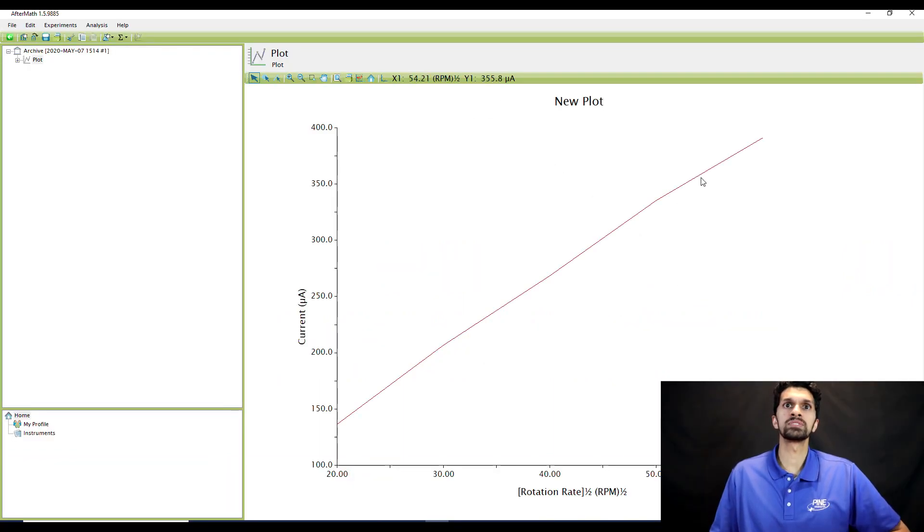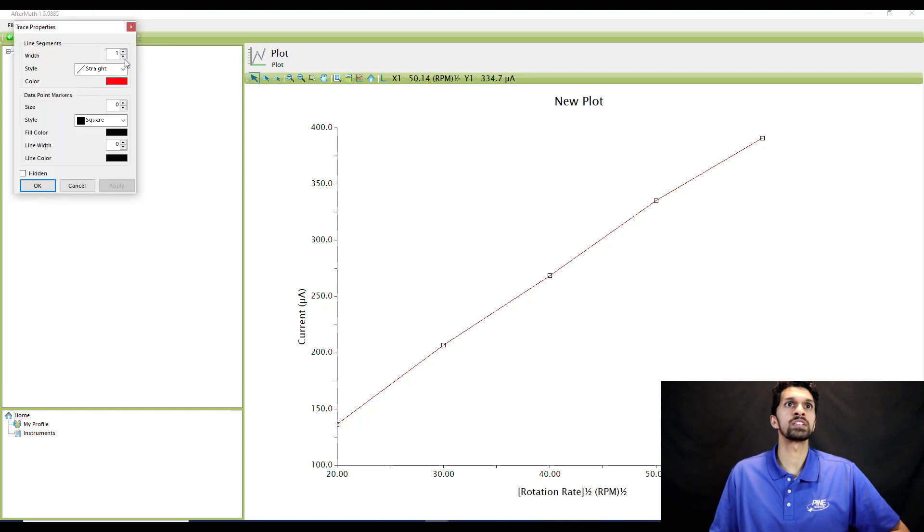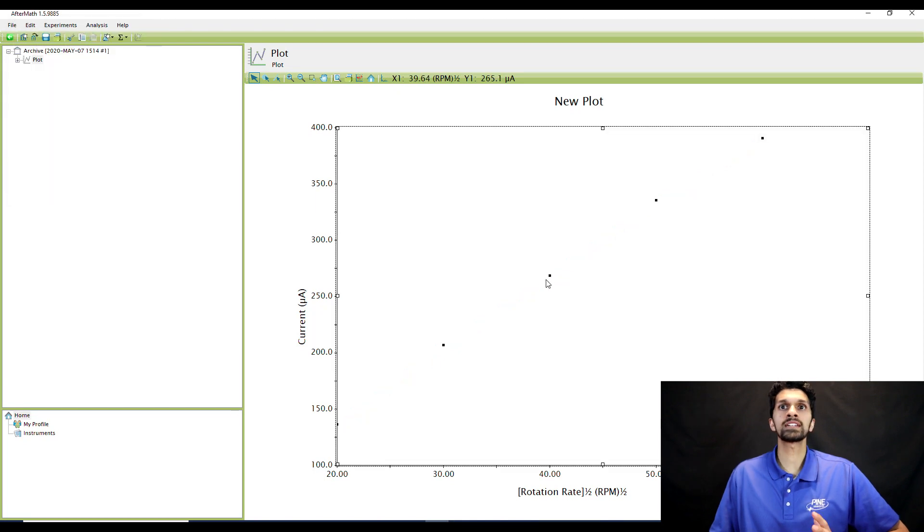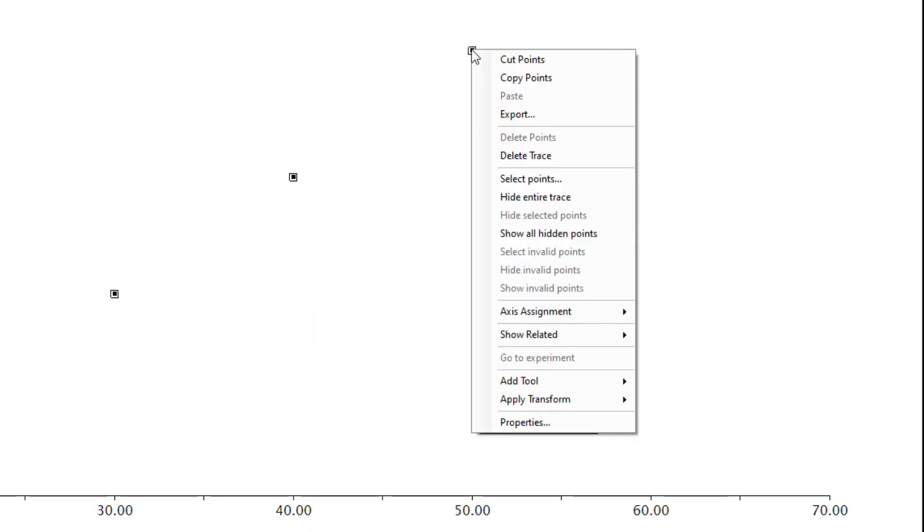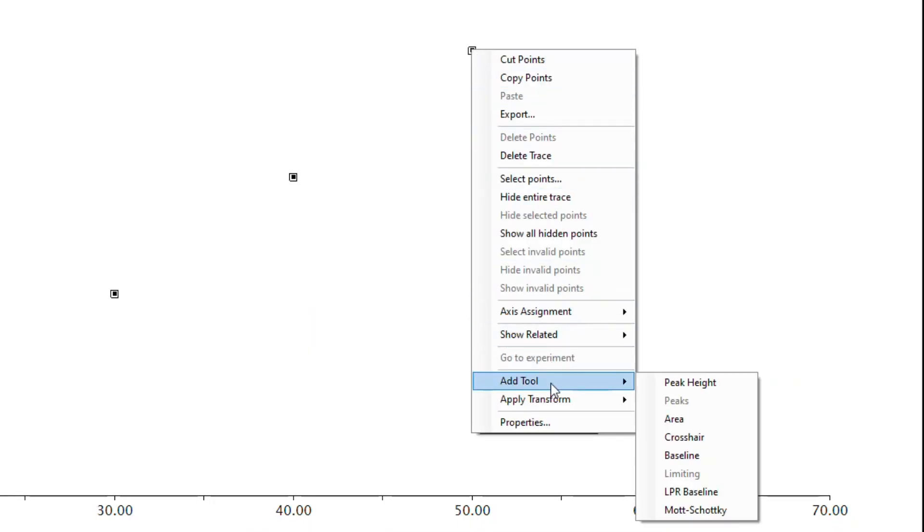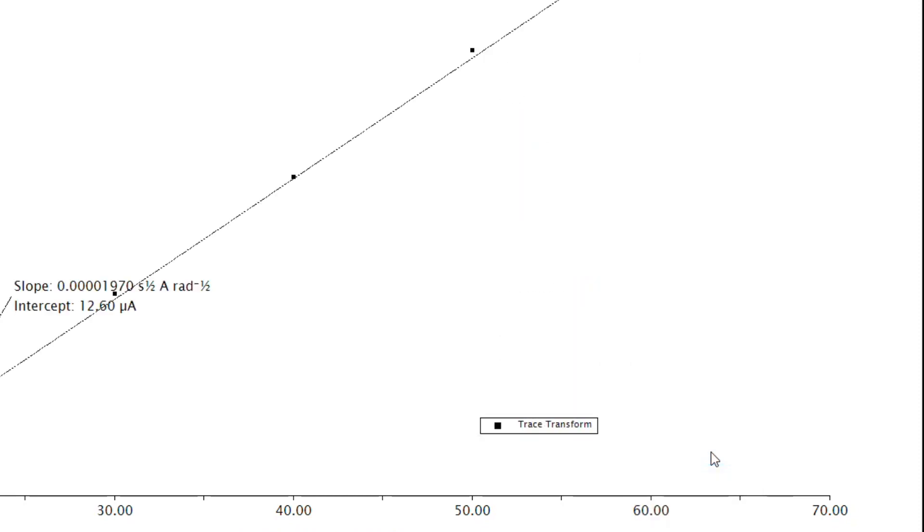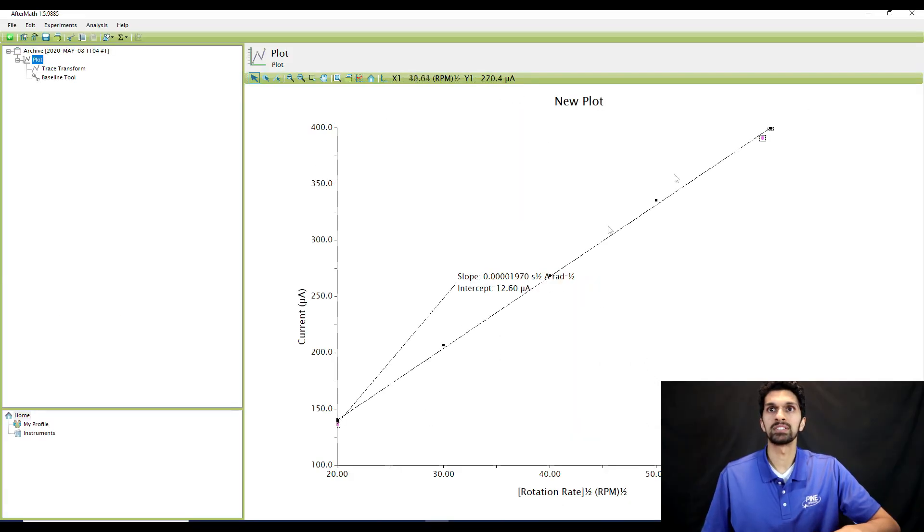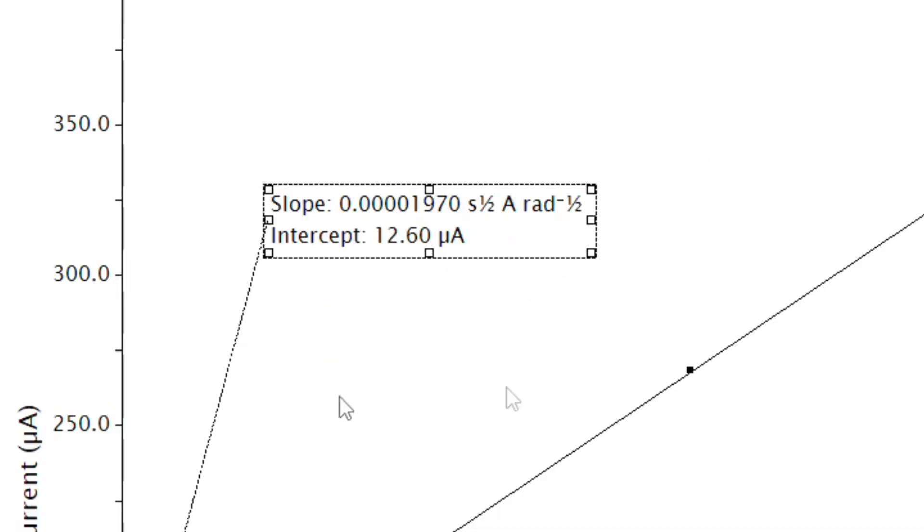All right, so all of these data points here are actually connected by a line by default. I just want to change that. It'll be a little easier for you to see the individual data points. And now the next thing I want to do is to perform the linear regression. I am going to actually use the baseline tool. So I'm going to left click on the data points, right click, I'm going to add tool, I'm going to hit baseline. After I hit baseline, it creates this linear regression. And over here, you can see it gives me the slope and the y-intercept.